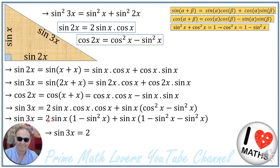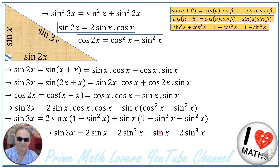After substitution and simplification it becomes 2 sine of x minus 2 sine cubed of x plus sine of x minus 2 sine cubed of x. Collecting terms: 2 sine of x plus sine of x gives 3 sine of x, and minus 2 sine cubed of x minus 2 sine cubed of x gives minus 4 sine cubed of x. So sine of 3x equals 3 sine of x minus 4 sine cubed of x.